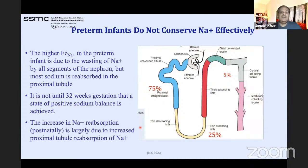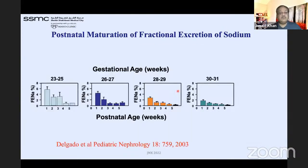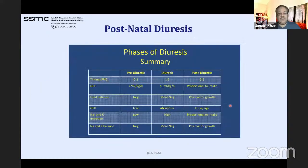Preterm infants do not conserve sodium effectively. Fractional excretion of sodium is high in preterm infants due to sodium wasting. It is not until 32 weeks gestation that there is a positive sodium balance; sodium reabsorption is mainly 75% in the proximal convoluted tubule, then the ascending limb of the loop of Henle, then 5% in the distal convoluted tubule. The lower the gestational age, the higher the fractional excretion of sodium.